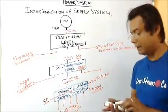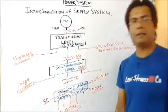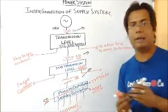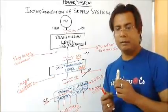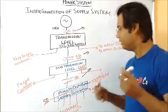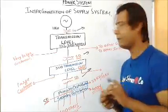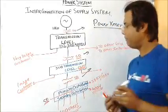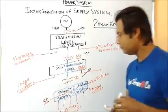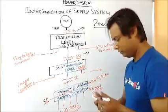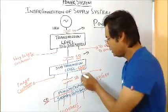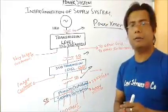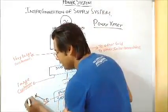Now we can identify the types of transformers in this system. The step-up transformer and the two step-down transformers at the transmission and sub-transmission stages are called power transformers. The last transformer — between primary distribution and secondary distribution — is called a distribution transformer.